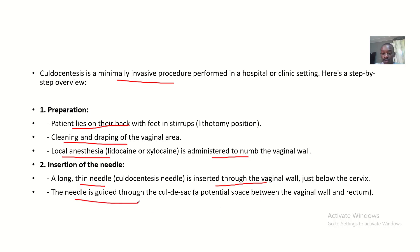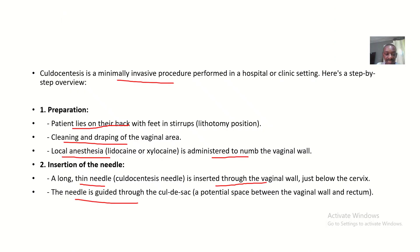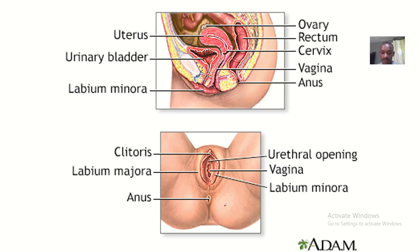The needle is guided through the cul-de-sac, which is a potential space between the vaginal wall and the rectum. This space between the rectum and the vagina is where you insert the needle, because if there is fluid accumulation in the pelvic area, it tends to accumulate there since that space is empty. So you insert the needle into the cul-de-sac — that is the name of that space.